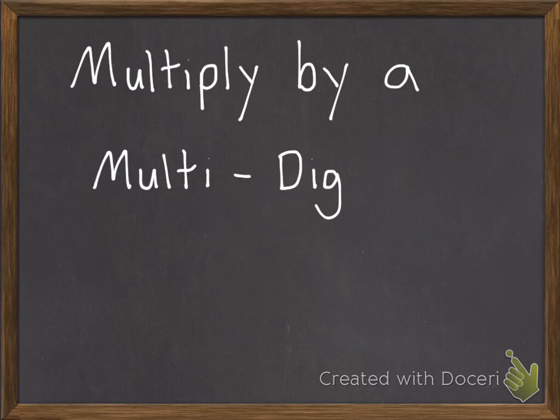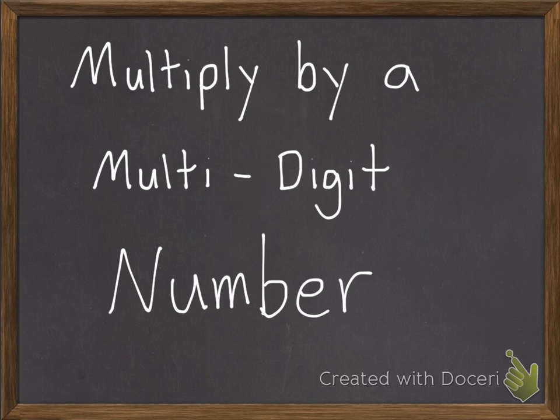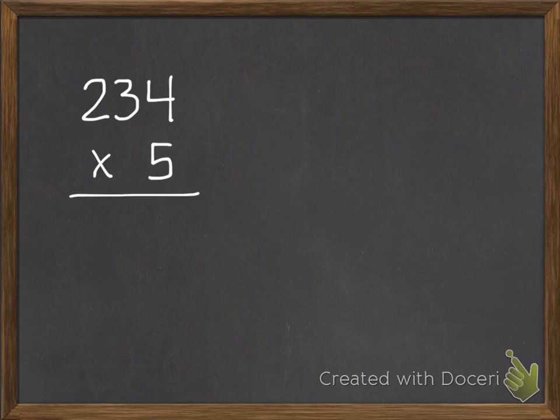Today we're going to multiply by a multi-digit number. So far in this chapter we've done two-digit by one-digit multiplication. Today we're going to get to three and four-digit times one-digit numbers.